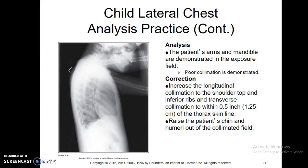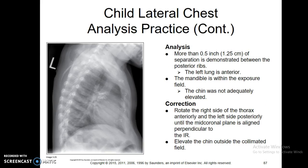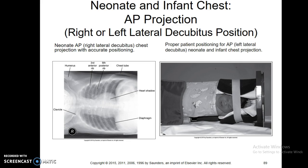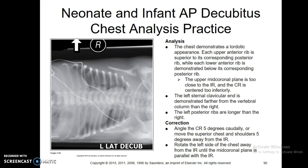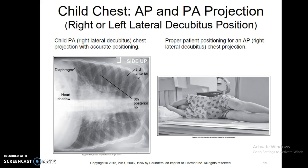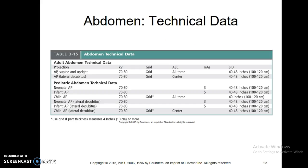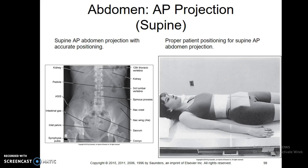For kids, get the arms up and watch rotation. For the abdomen, there are all sorts of positioning mistakes — just make sure you get the pubic bone on there and you get the kidneys on the image.